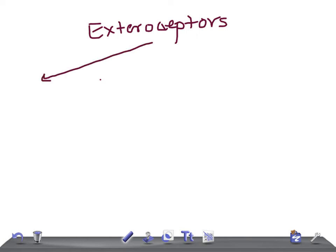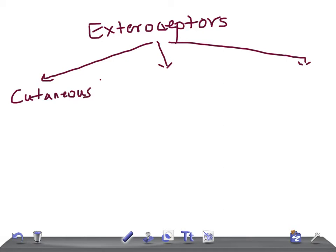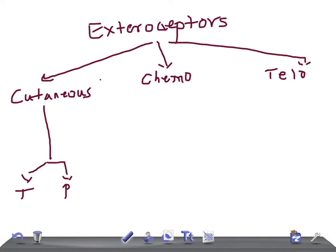The exteroceptors are of three types: cutaneous receptors, chemoreceptors, and teloreceptors. The cutaneous receptors are further divided into five groups: touch, pressure, cold, warm, and pain.